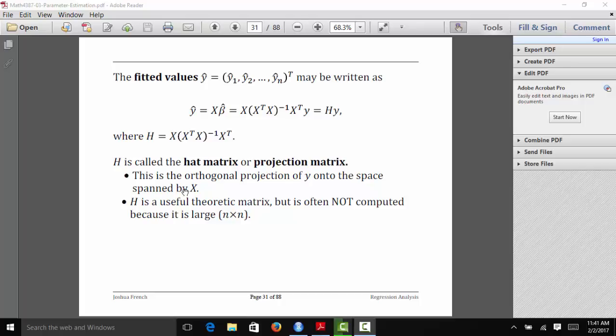People never compute H when they're trying to compute the fitted values because it's too large. It's an n-by-n matrix, which means that when you have to do the matrix algebra, it takes a lot longer to compute than if you do it in other ways. So y hat equals the hat matrix times the observed vector of responses, but we wouldn't normally compute it in this way.